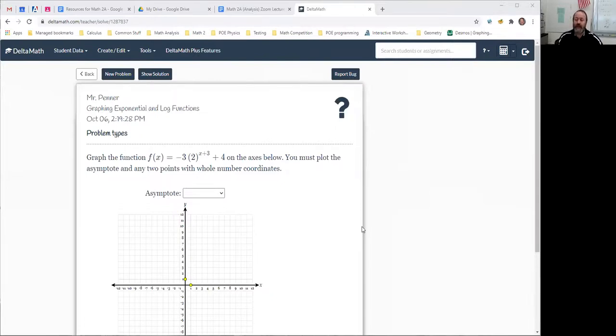Now, the first thing that I notice is this is negative 3 times 2 to a power plus 4, and there's a whole bunch of stuff going on. And I just see blah blah blah, but what I really see is y equals 2 to the x. So I have f of x is equal 2 to the x. And then what I would like to turn that into is negative 3 times 2 raised to the x plus 3 plus 4. So let's talk about how that's going to play out.